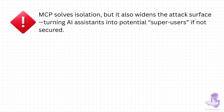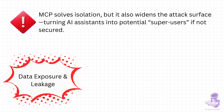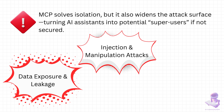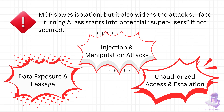MCP solves the problem of isolation, but it also opens up a new one. By connecting language models directly to real systems, we risk turning AI assistants into potential super-users if things aren't secured properly. First, there's data exposure and leakage — a misconfigured connector might give an AI assistant access to sensitive records, and once that data is exposed, there's no taking it back. Next, injection and manipulation attacks: an attacker could feed malicious input that tricks the assistant into abusing its connections, maybe altering records or triggering unintended actions. And finally, unauthorized access and escalation — if permissions aren't tightly controlled, an assistant could end up with more power than intended, moving from read-only into dangerous territory, like modifying or deleting data.